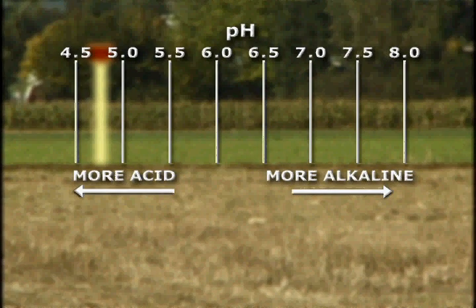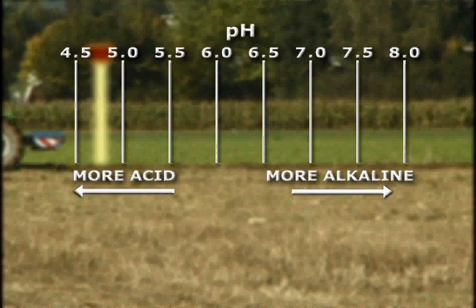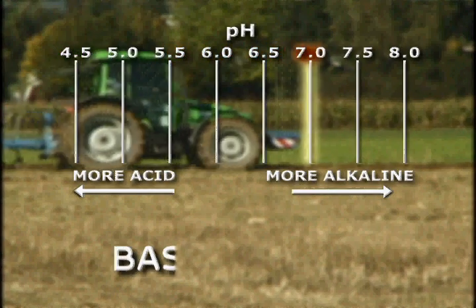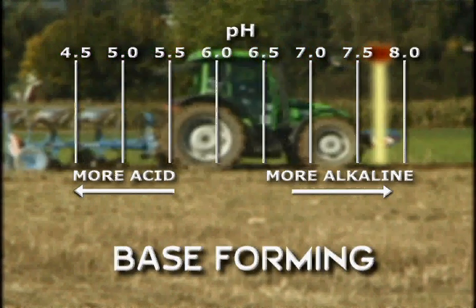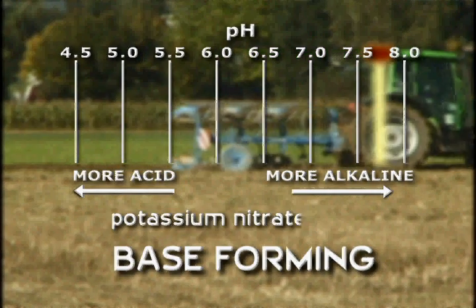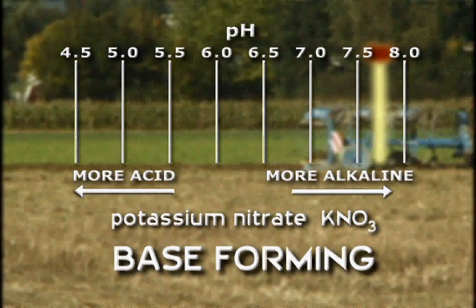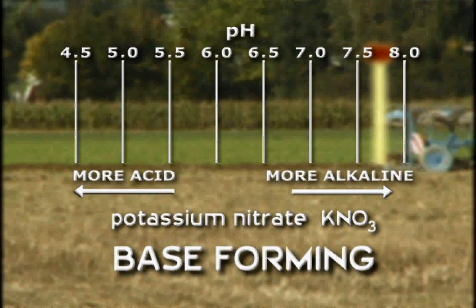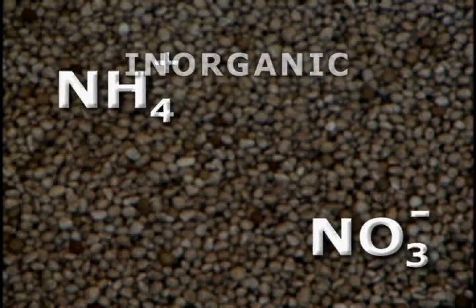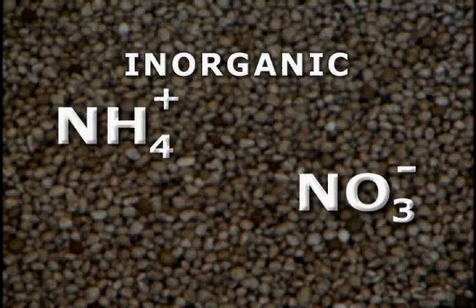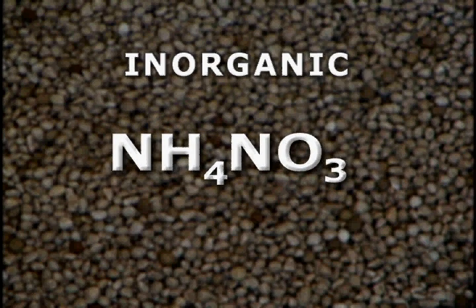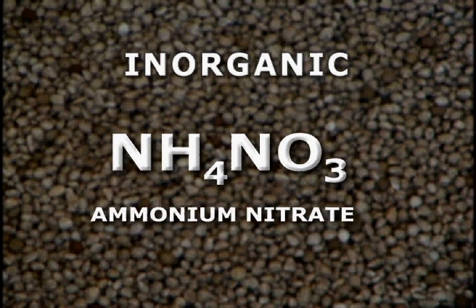A fertilizer that causes reactions in the soil system which increase the soil pH by reducing hydrogen ions would be termed a base-forming fertilizer. Potassium nitrate is an example of a base-forming fertilizer. Inorganic fertilizers are carbon-free materials containing nutrients in their pure chemical form — for example, ammonium nitrate.